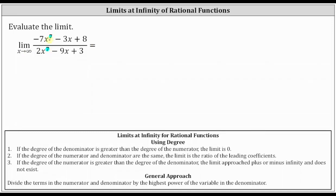Because the degrees are equal, or the same, the limit is equal to the ratio of the leading coefficients, which would be negative seven divided by two, or negative seven halves.